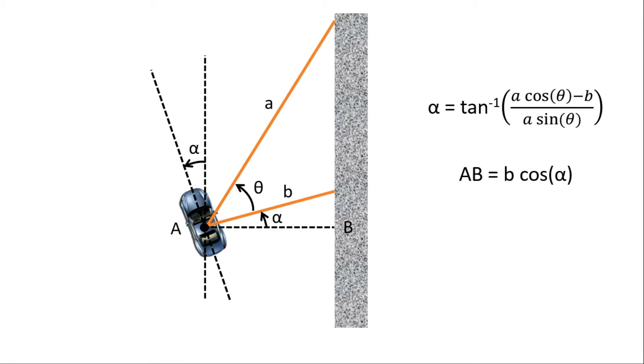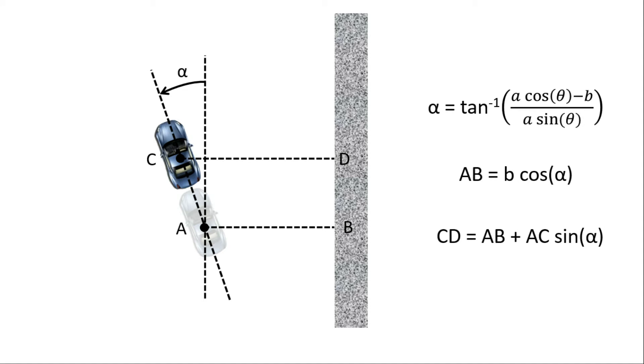But we cannot use this distance directly. Due to the high speed of the car and a finite delay in execution of the manoeuvre, we project the car forward a certain distance from its current position. Now, to find the distance of the car from the wall, we need to add the sin component of the additional distance travelled.